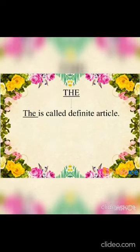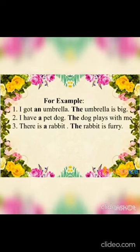Now we will talk about the article 'the'. 'The' is called the definite article. For example: I got an umbrella — the umbrella is big. Here we can see when we are talking again about that umbrella, we use the article 'the'. I have a pet dog — the dog plays with me. There is a rabbit — the rabbit is furry.